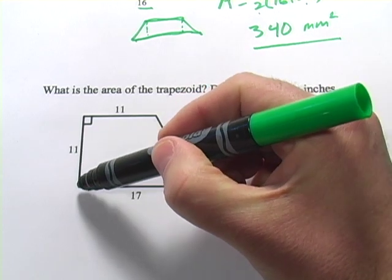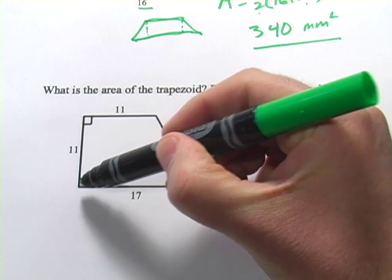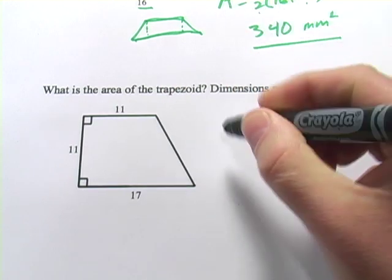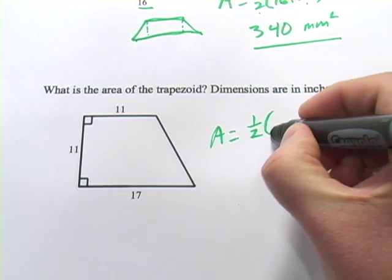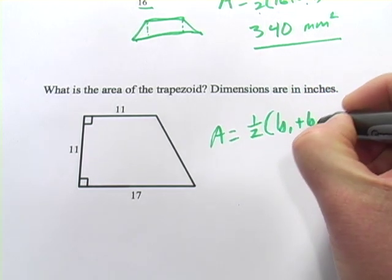In this case, the height is actually the same as the side that has the two right angles. So, in our formula, we've got area equals one half of base one plus base two times the height.